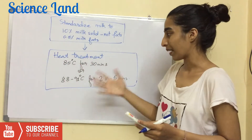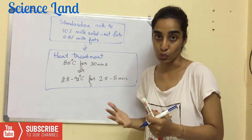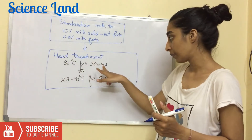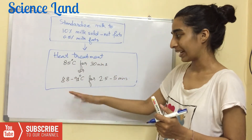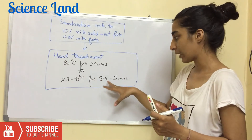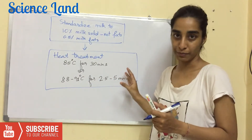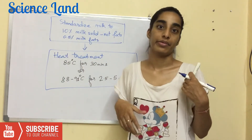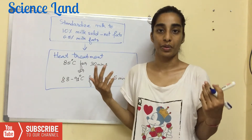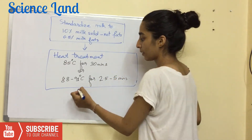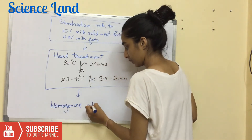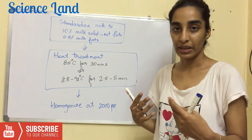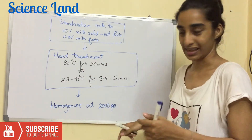Depending on the temperature chosen: 85°C for 30 minutes, or 88 to 91°C for two and a half to five minutes. Heat treatment is given to kill bacteria and other microbial contamination. The next step is to homogenize the milk at 2000 psi.